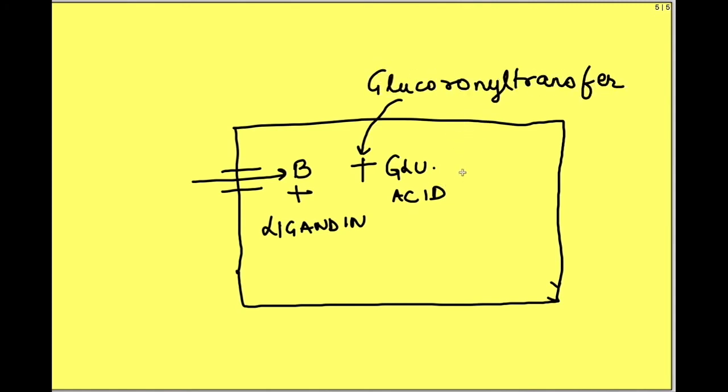Once bilirubin enters via facilitated diffusion, it binds with ligandine. This bilirubin then combines with glucuronic acid in presence of an enzyme, glucuronyl transferase, and forms bilirubin diglucuronide.